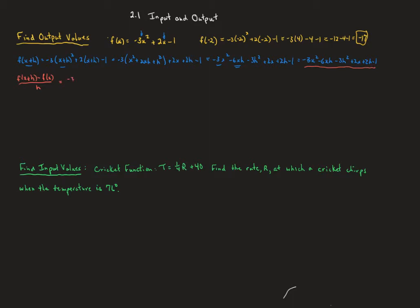So we've got negative 3x squared, minus 6xh, minus 3h squared, plus 2x, plus 2h minus 1 — and then we're going to subtract from that all of f of x. So the quantity: negative 3x squared plus 2x minus 1, all over h.